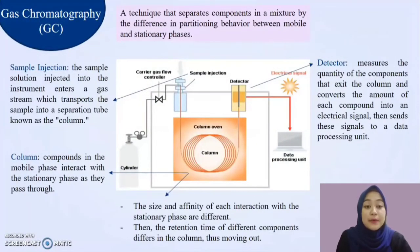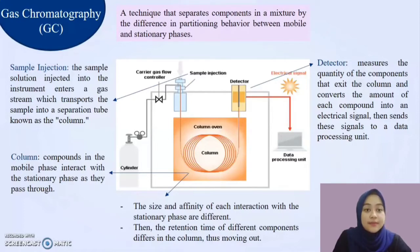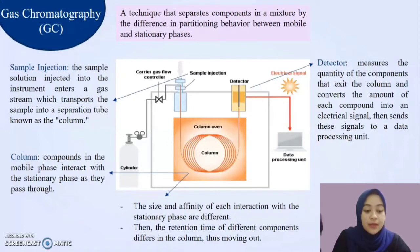Gas chromatography is a technique that separates components in a mixture by the difference in partitioning behavior between mobile and stationary phases. This is the schematic diagram of gas chromatography and its labeled components. In sample injection, the sample solution injected into the instrument enters a carrier gas which transports the sample into a separation tube known as the column. Compounds in the mobile phase interact with the stationary phase as they pass through. Due to differences in properties and structures of each component, the size and affinity of each interaction with the stationary phase are different, so the retention time of different components differs in the column, moving out from the column in different orders.